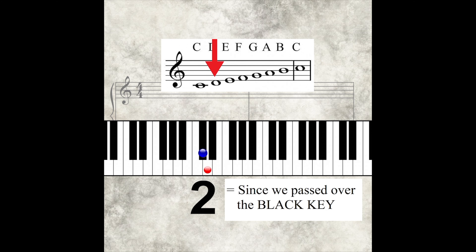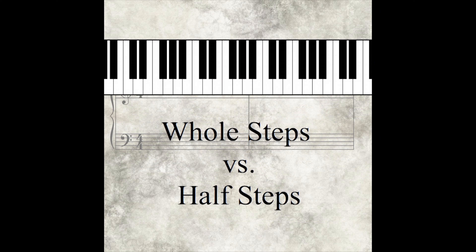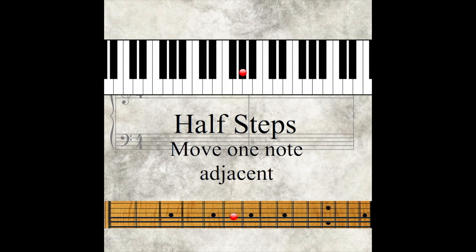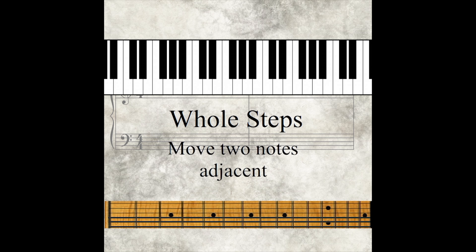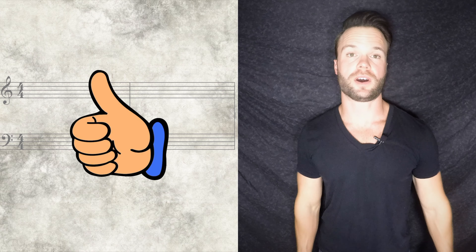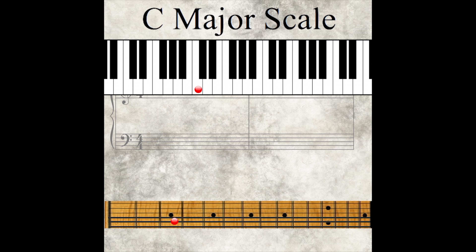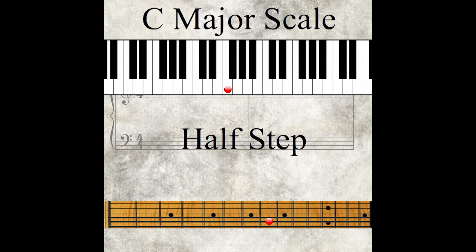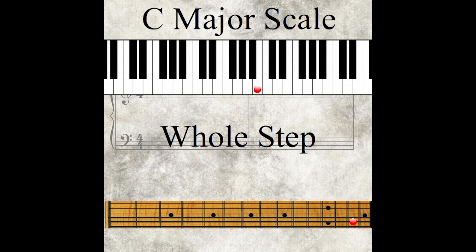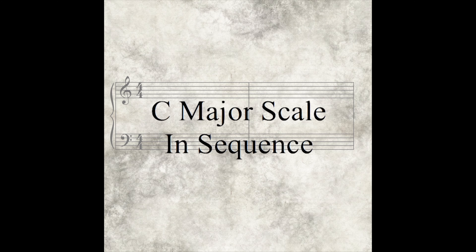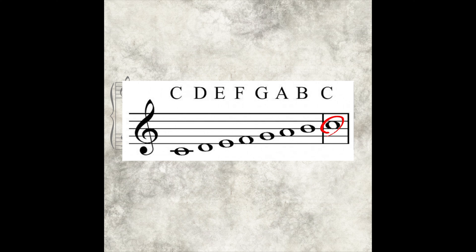Inside the C major scale, if we count the black notes we don't play, we can see we move either one or two spaces every single time. From now on, we will refer to these as whole steps and half steps. Half steps are moving one note adjacent, which on a guitar would be one fret. Whole steps move two notes adjacent, which on a guitar would be two frets. C to D is a whole step. D to E is a whole step. E to F is a half step. F to G is a whole step. G to A is a whole step. A to B is a whole step. B to C finishes off the scale and is also a half step.